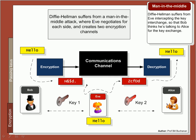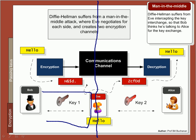Unfortunately, Diffie-Hellman suffers from the man-in-the-middle attack, or Eve in the middle. In this case, she can negotiate one key with Bob and another key with Alice, and as far as Bob and Alice can tell, they are negotiating with each other.